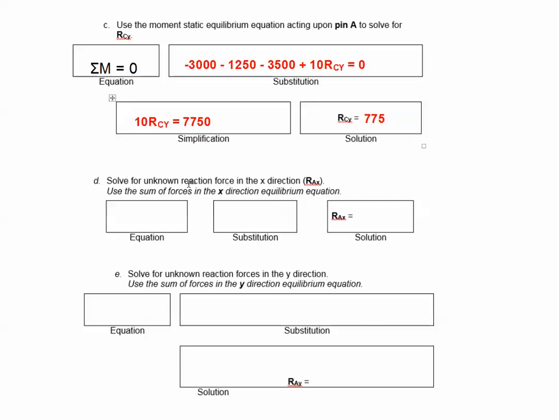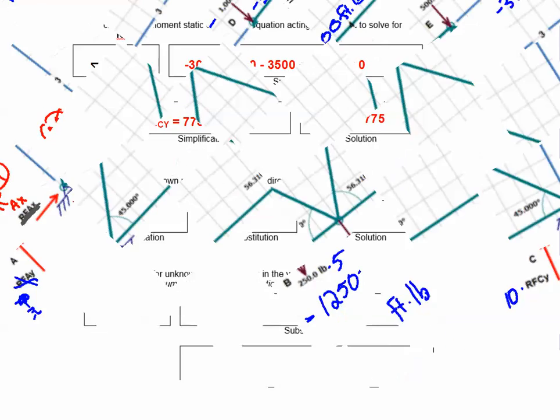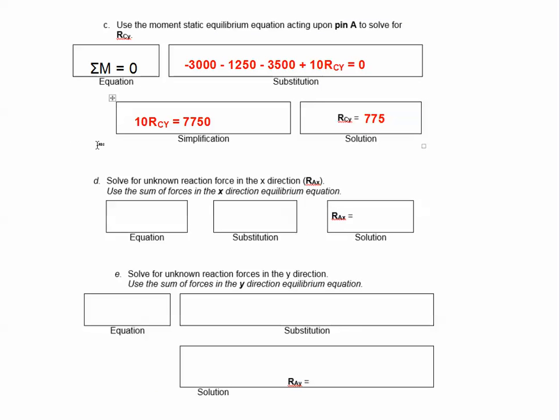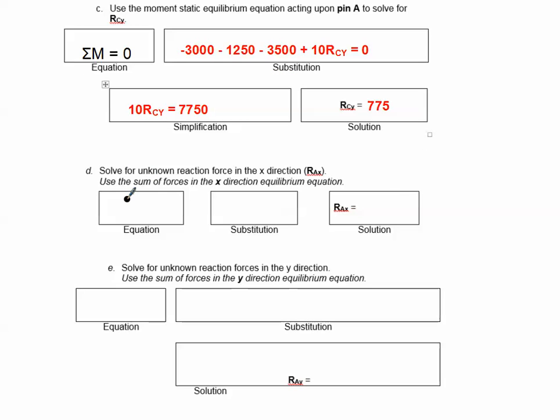Let's continue now. Here's the free body diagram that we have. Since we now found this is 775 pounds, that will give us more information to find a few more reactions such as RAX and RAY. Let's go back to this box. What it wants us to do is write the equation for the sum of all forces in the X direction. So I'm going to draw that here, sigma FX equals 0.